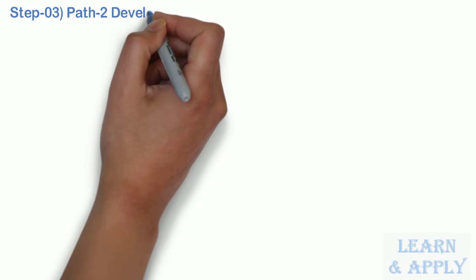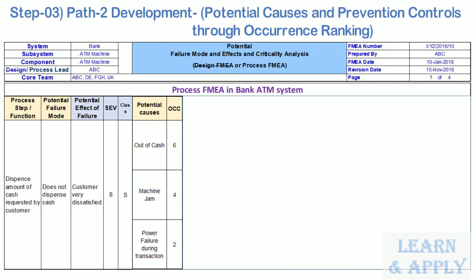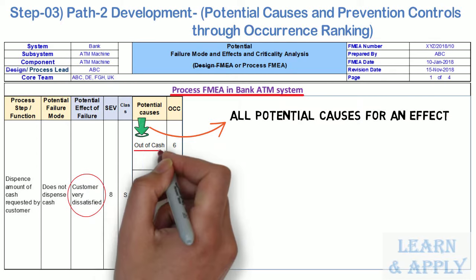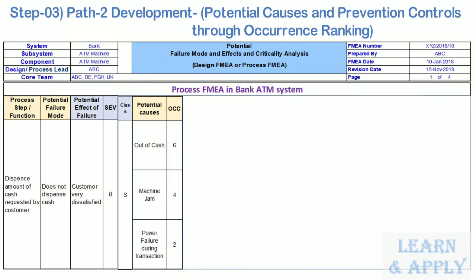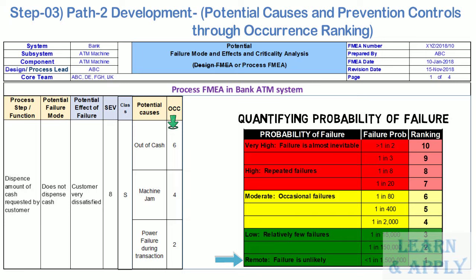Step 3: Path 2 development — potential causes and preventive controls through occurrence ranking. Causes are selected from the design or process inputs or past failures and placed in the cause column when applicable to a specific failure mode. For the ATM machine example, potential causes of the effect 'customer very dissatisfied' include: out of cash, machine jam, and power failure during transaction. Occurrence is rated on a scale of 1 to 10, where 1 indicates failure is unlikely and 10 indicates failure is almost inevitable. These causes are scored 6, 4, and 2 respectively, indicating moderate, moderate, and low probability of failure.